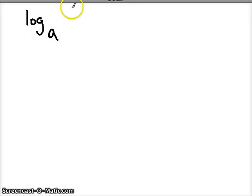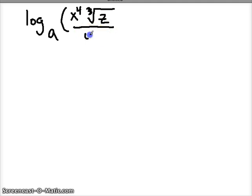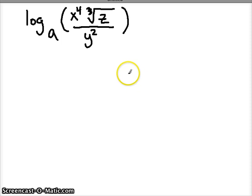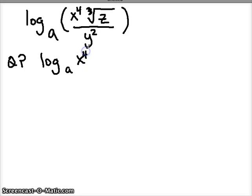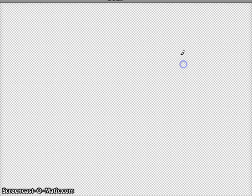Let's do one more — a big long one. If I have log base a of x to the 4th times the cube root of z, all divided by y squared, how can I write this as a sum and difference of logs, making sure to get rid of all exponents? The first property we want to use is the quotient property, so we write log base a of (x to the 4th times the cube root of z) minus log base a of y squared.